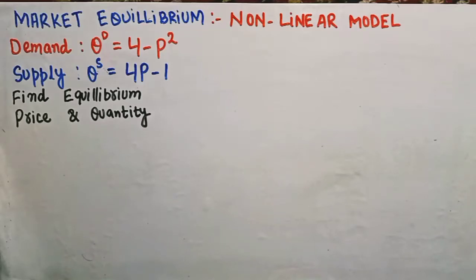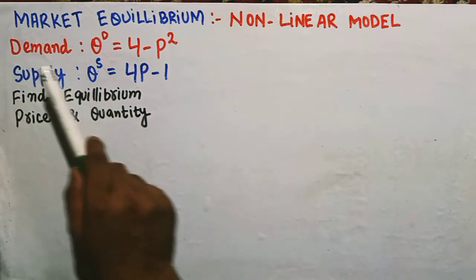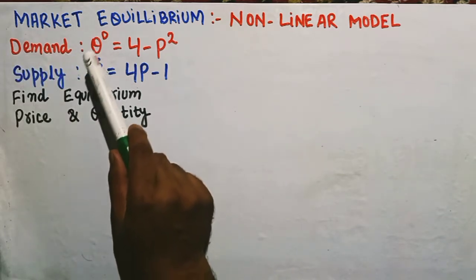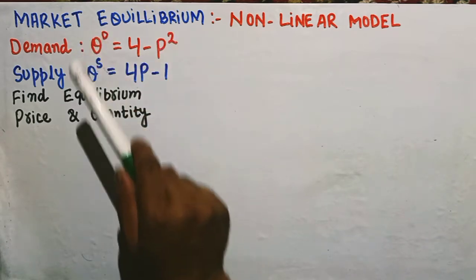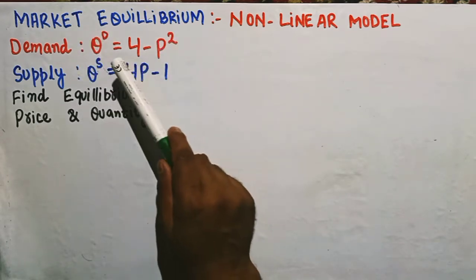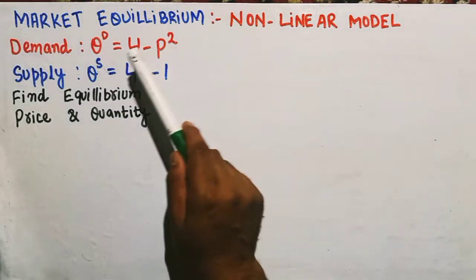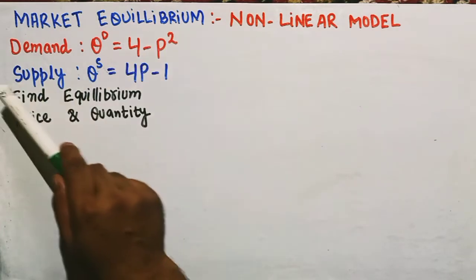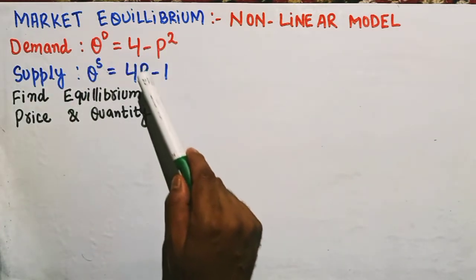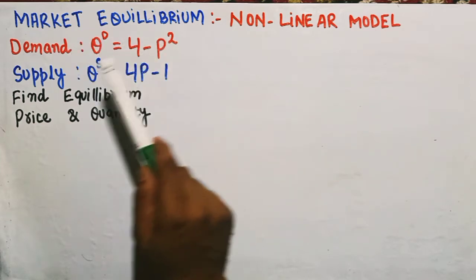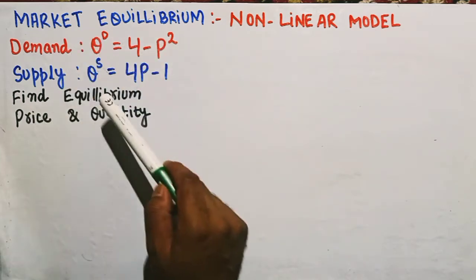In this video we will learn how to find the market equilibrium in case of a nonlinear model. The question gives us the demand function Qd = 4 - P² and the quantity supplied Qs = 4P - 1. We have to find out the equilibrium price and quantity.